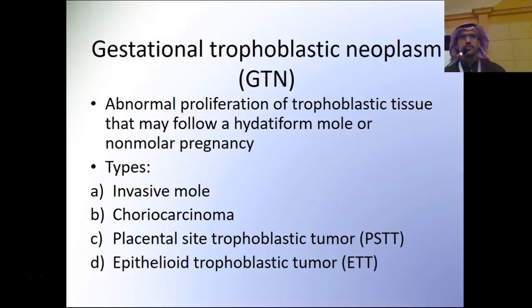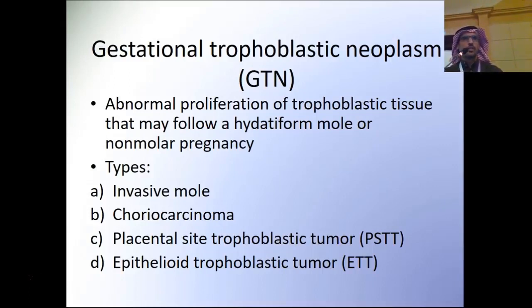The definition of gestational trophoblastic neoplasm: it is a group of malignant neoplasms that consists of abnormal proliferation of the trophoblastic tissue that may follow a hydatidiform mole or non-molar pregnancy like abortion, ectopic pregnancy, or full-term pregnancy.